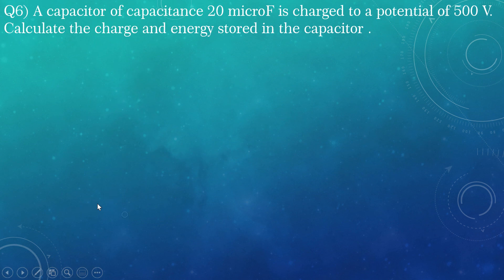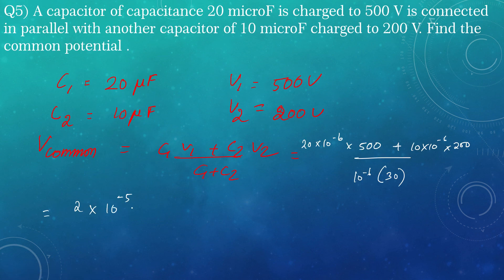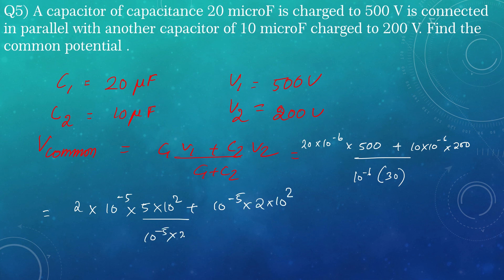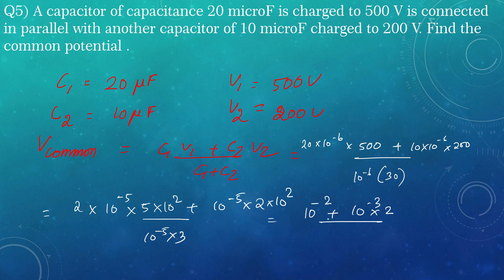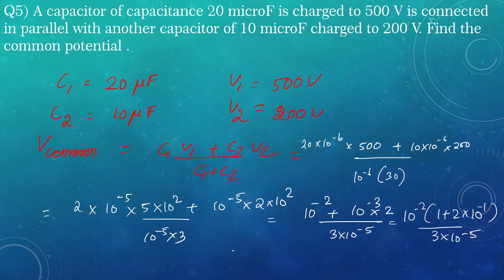That is 2 into 10 raised to minus 5 into 500, plus 10 raised to minus 5 into 2 into 10 squared, divided by 10 raised to minus 5 into 3. Simplifying: 10 raised to minus 4 into 10 squared gives 10 raised to minus 2. So we get 10 raised to minus 2 plus 10 raised to minus 3 into 2, divided by 3 into 10 raised to minus 5. That gives 1 plus 2 into 10 raised to minus 1, by 3 into 10 raised to minus 5, and after the calculation we get the answer to be 400 volt.